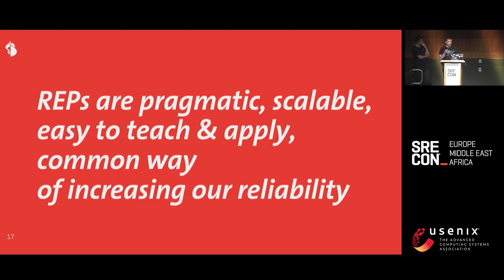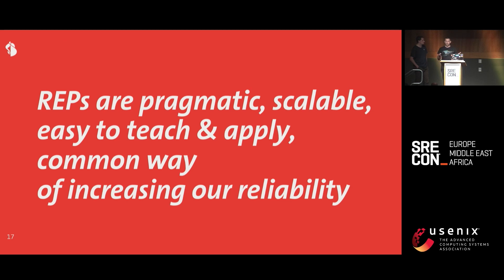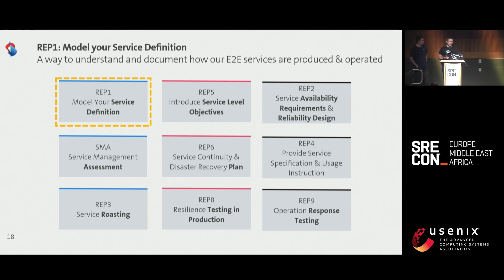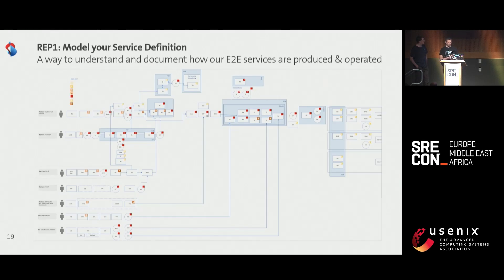In this talk, we'll focus on REP 1, REP 3, and REP 8. REPs are pragmatic, scalable, easy to teach and apply — a common way of increasing our reliability. For us it was really important to make this scalable and decentralized, because we don't have the capacity to talk to 5,000 engineers directly. Now let's go into REP 1, model your service definition. This diagram was created out of one of our outages.